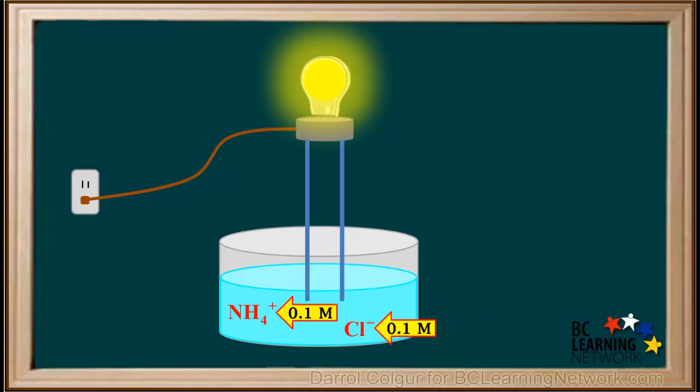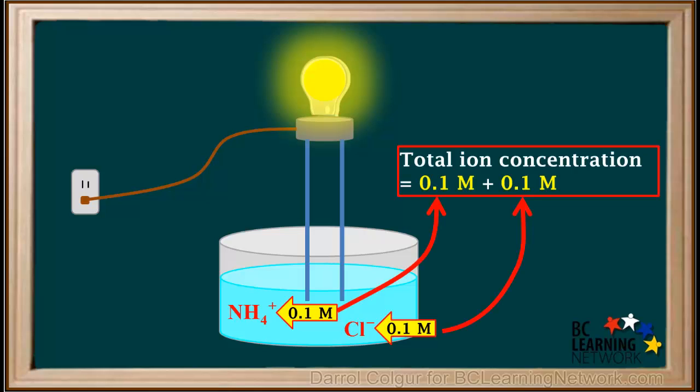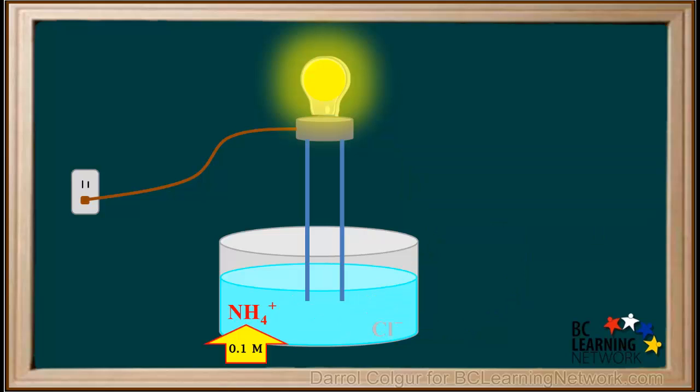As far as conductivity is concerned, it doesn't matter that NH4+ is a weak acid. Because NH4Cl is a highly soluble ionic salt, it dissociates completely into ammonium and chloride ions, both with a concentration of 0.1 molar. So the total ion concentration in this solution is 0.1 plus 0.1, which is 0.2 molar, high enough to account for the high conductivity.